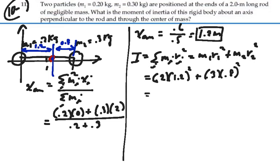and that would be 0.288 plus 0.192. So that is 0.48 kg meters squared.